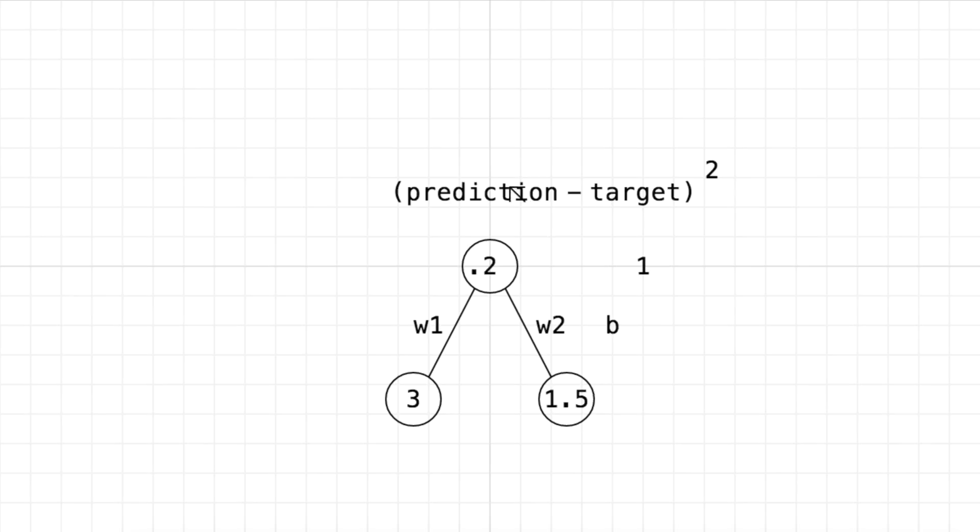So this 0.2 actually represents the prediction of the neural network, and the one is the target value. We want it to be close to one, so it's the target value, and we square the difference.